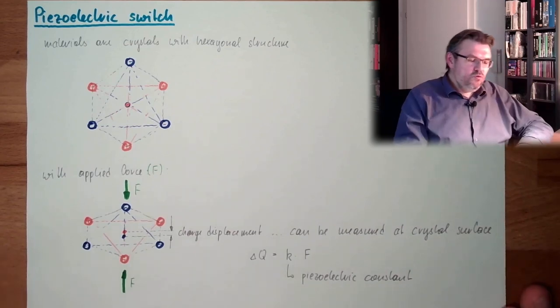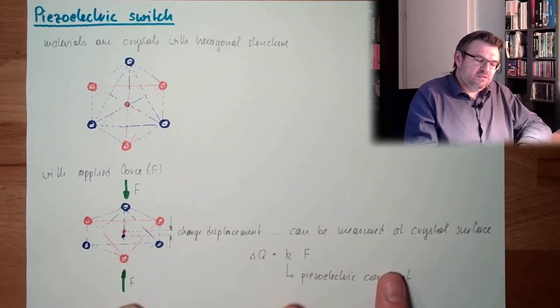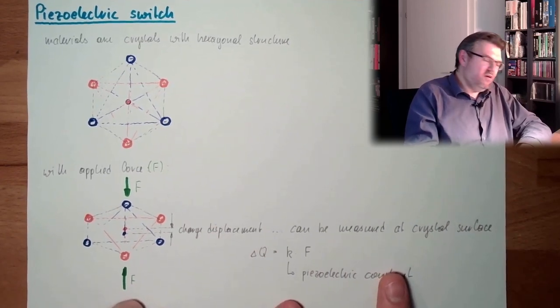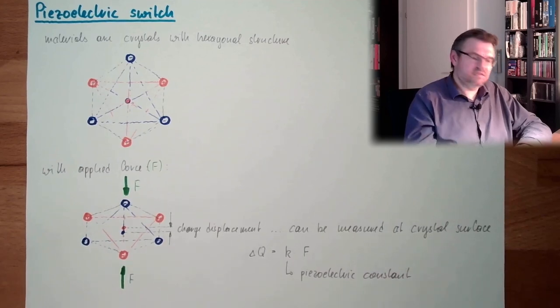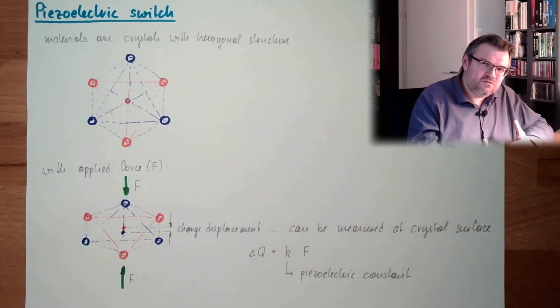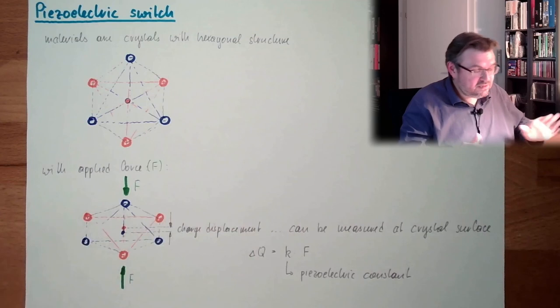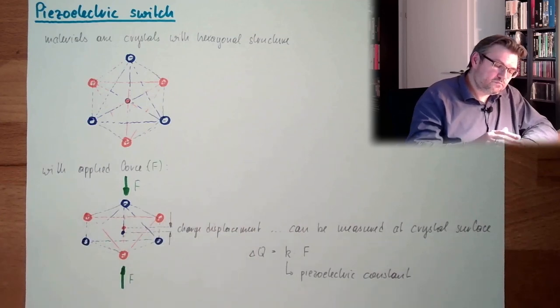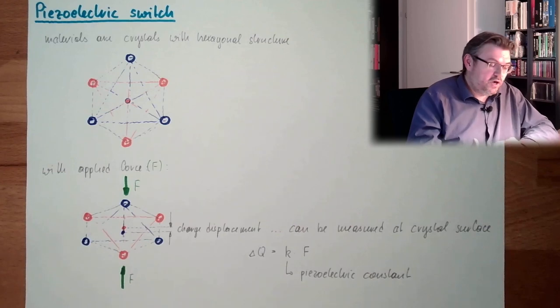And if you are measuring, you need to have a special amplifier for these charges, because this has to have a really high input resistance, because those small charges, they need to stay at the crystal, because otherwise, they cannot be measured. So you need a special type of amplifier, called charge amplifier.